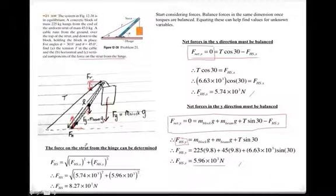So, now, we can also work out the force on the strut from the hinge totally, not just the two individual components, X and Y. And we do this by considering the Pythagoras theorem because we've got orthogonal components of force. And we simply know that the hypotenuse squared is going to be equal to the sum of the squares of the other sides. And from there, we find the force to be equal to 8.27 times 10 to 3 newtons.